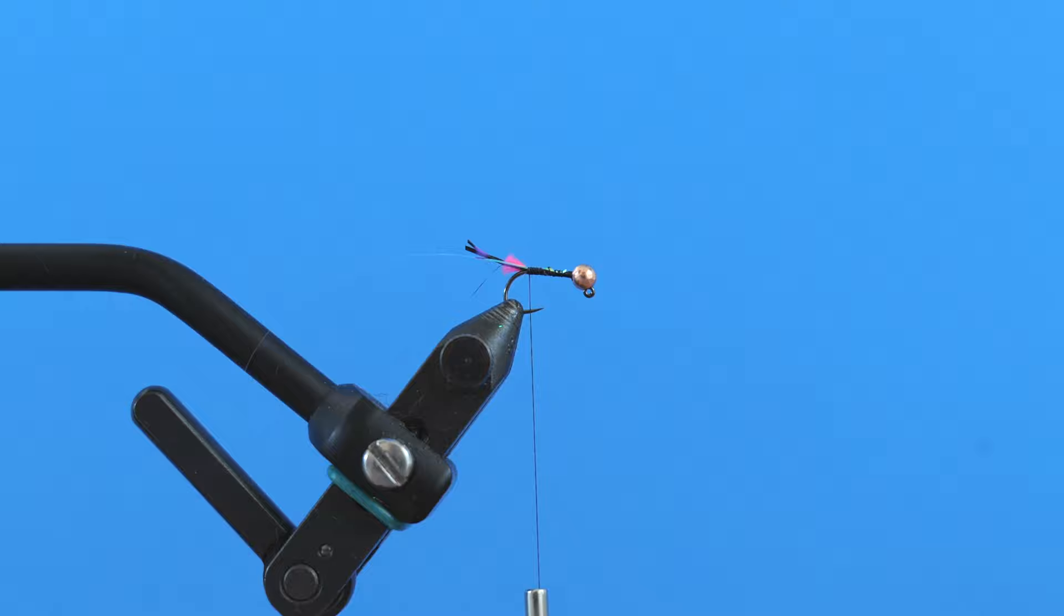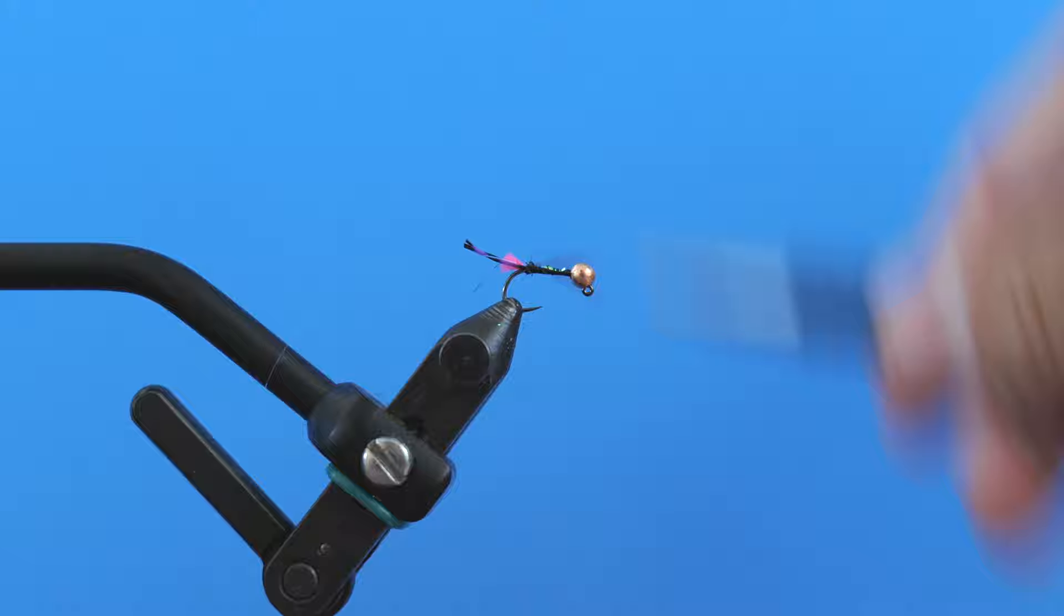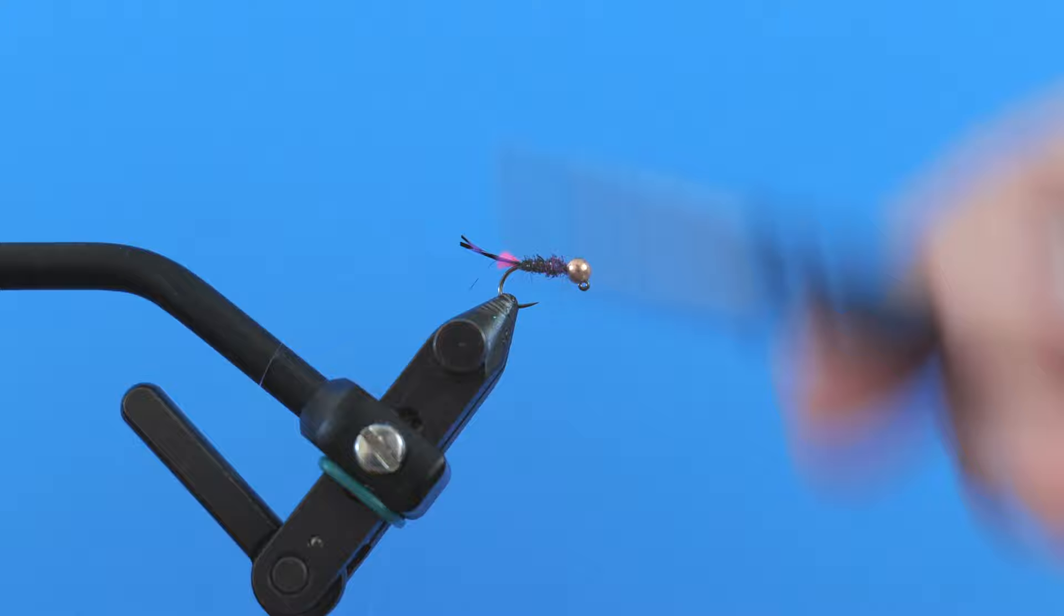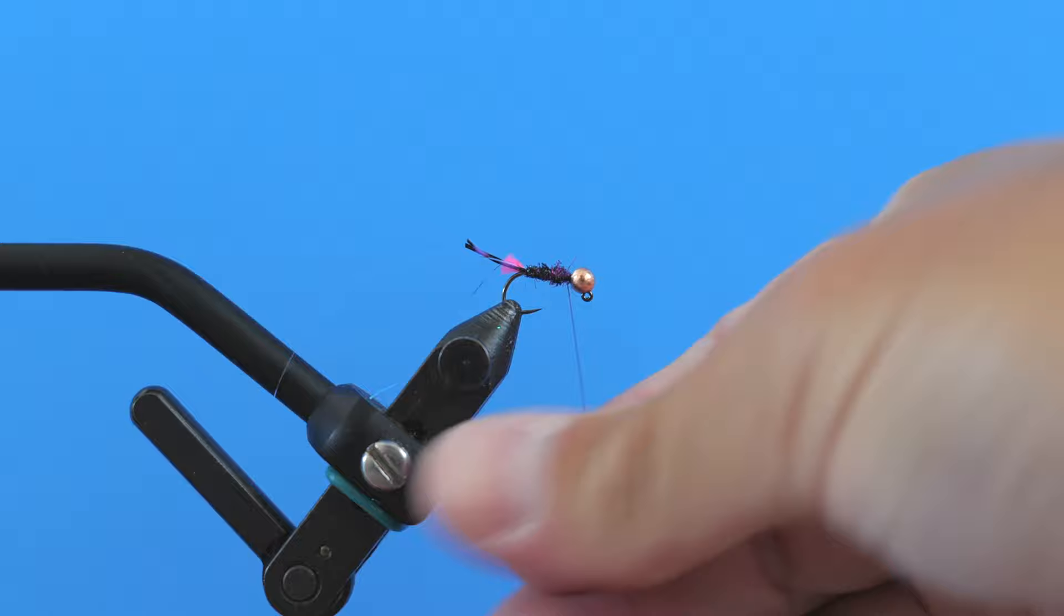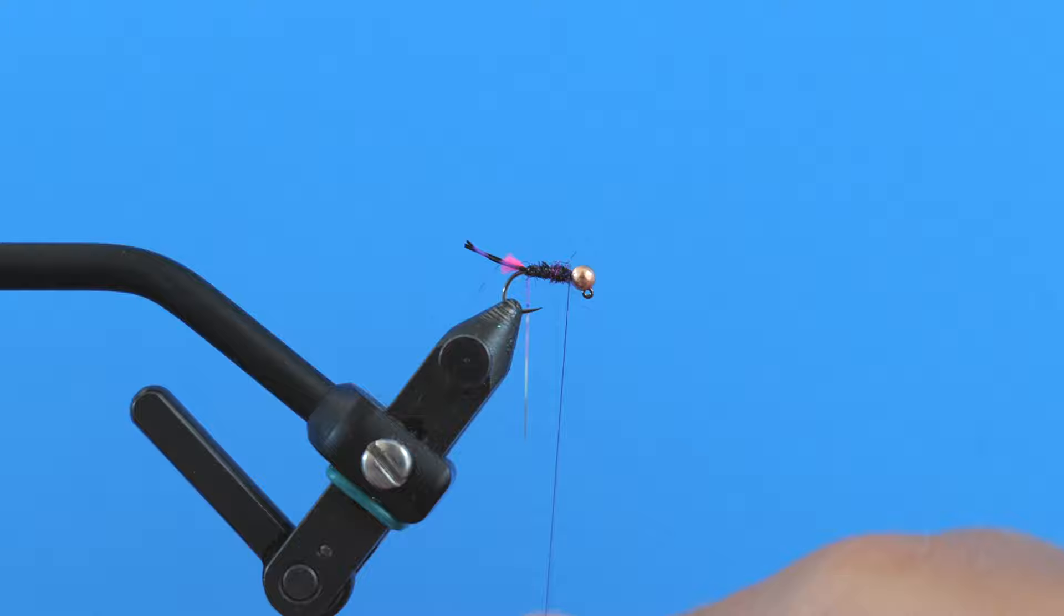Now I'm going to take my Hends Spectra Dub and I've got a purple color that I like a lot. You could use any kind of purple and black Ice Dub. I just happen to like the Spectra Dub. So I made a little noodle and I'm just going to do touching turns to build up a little bit of a body here. I need a little bit more there just to kind of get that taper nice up towards the front.